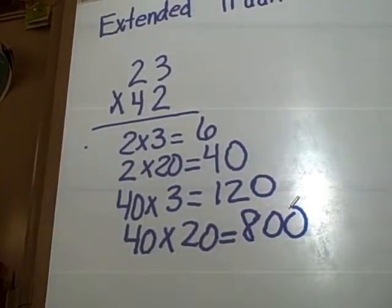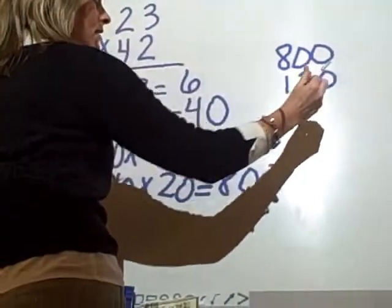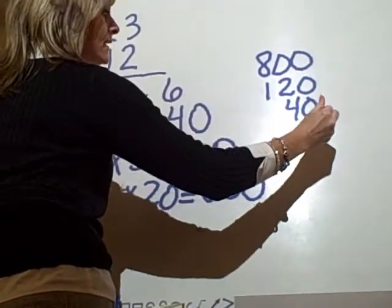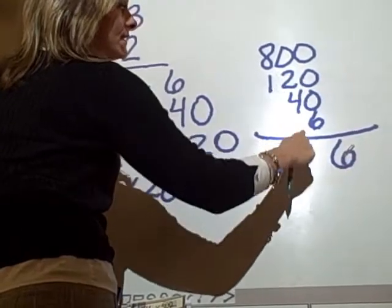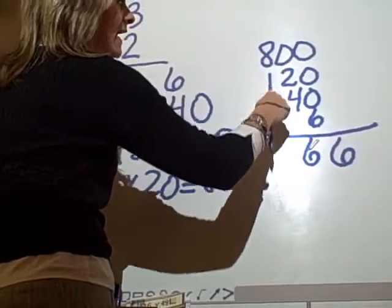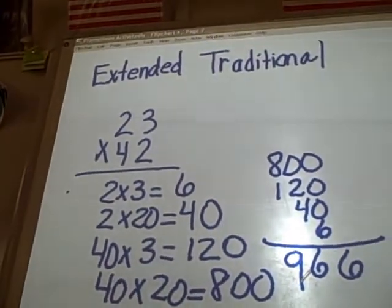Raise your hand if you think you can tell me what my next step would be. What do you think I'm going to do next? Josh, I'm going to add them up, okay? I can add them up, and if I take 800, 120, 40, and 6. I have my 1's column, and I get 6. I have my 10's column, 6. And 89, 9. And what is my answer? 9, 9, 6.